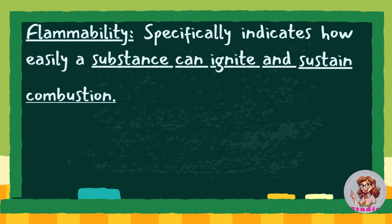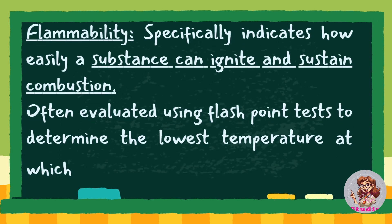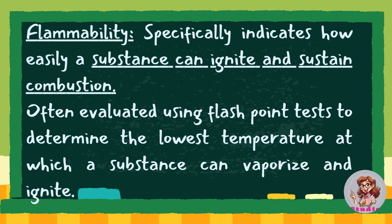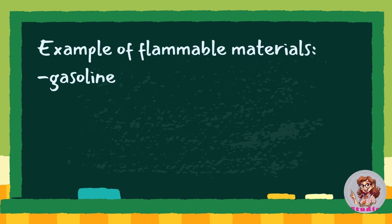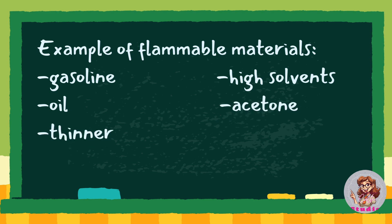Flammability specifically indicates how easily a substance can ignite and sustain combustion, often evaluated using flashpoint tests to determine the lowest temperature at which a substance can vaporize and ignite. Examples of flammable materials: gasoline, oil, thinner, high solvents, acetone, and lighter fluid.